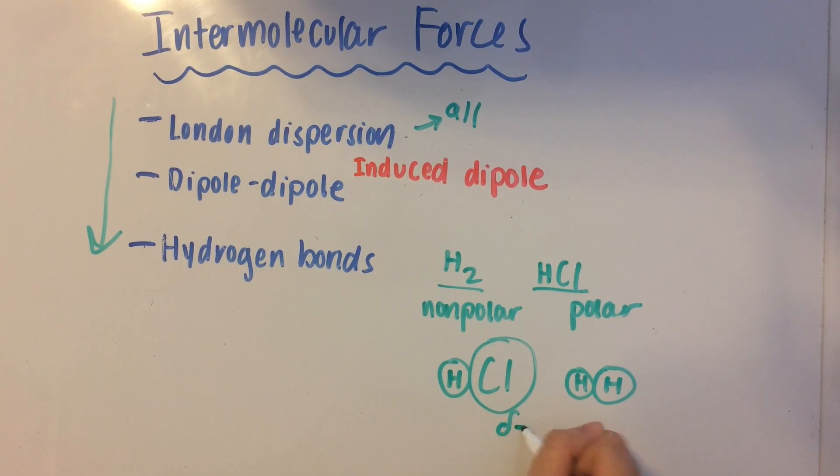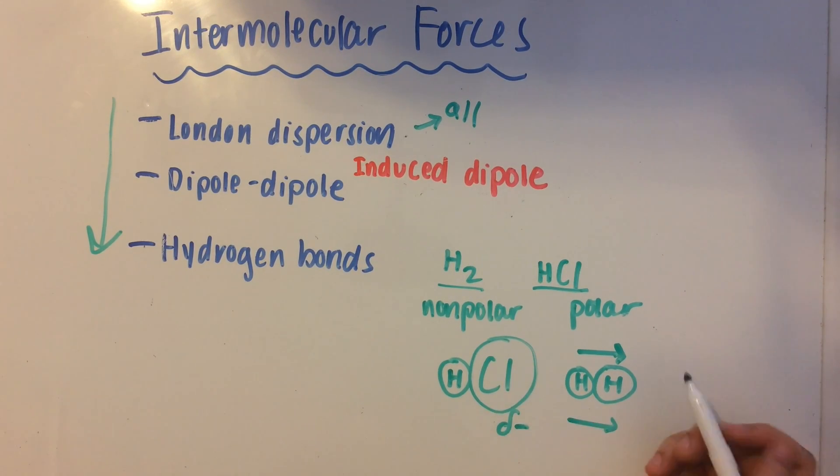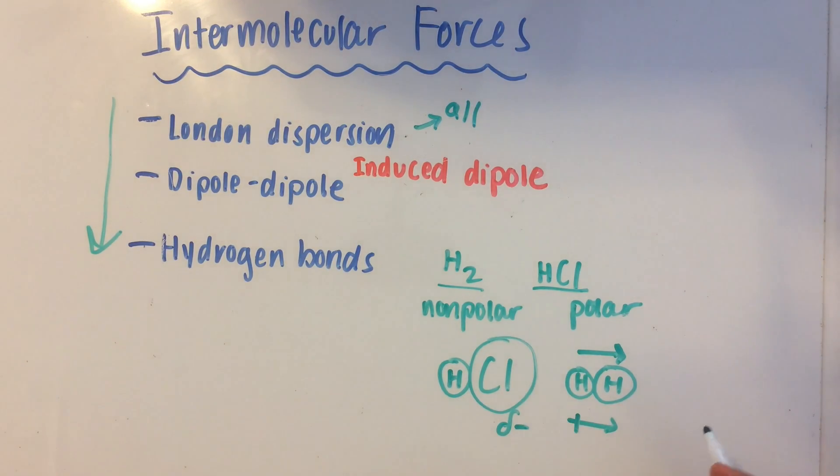So since this has a partial negative charge, it's going to repel the electrons on this side of the H2. So the electrons are going to want to move away from the Cl. So that's going to create a temporary dipole going in this direction. There's going to be a partial positive charge on this side. And that's going to be your induced dipole. The HCl is going to induce the H2 into a dipole. But that's going to be for a very short amount of time. It's going to be temporary, and it's not that strong.